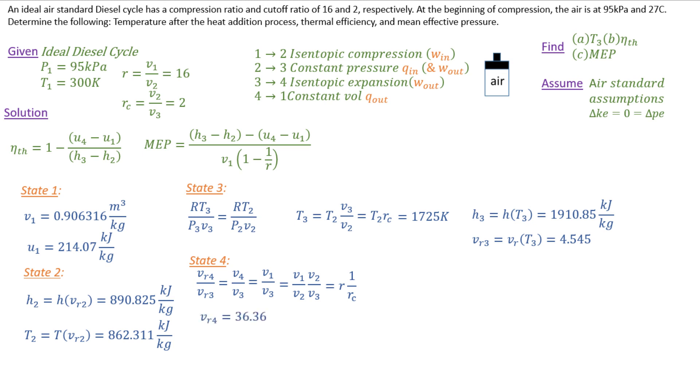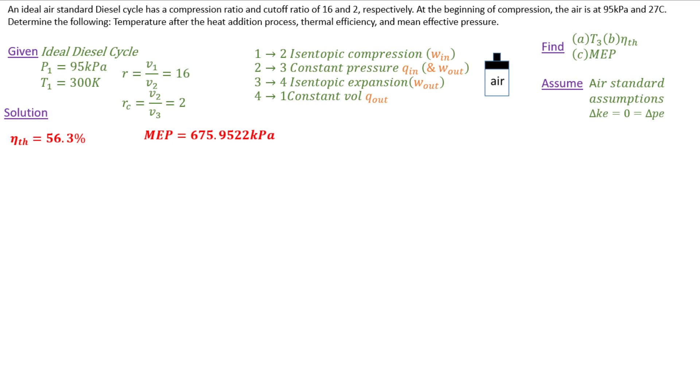And now I can get the very last property that I need, and that is U4. So once again, that requires me to go into my ideal air tables and interpolate at 36.36 for my VR_4 value. And once I plug those things in, I get a number for the thermal efficiency and the mean effective pressure. All right, hope that was helpful. Thank you for watching.